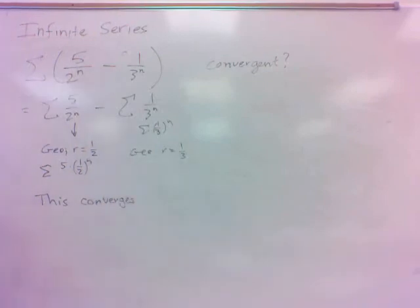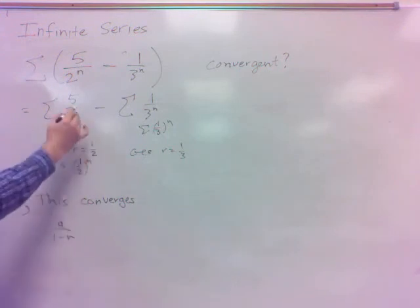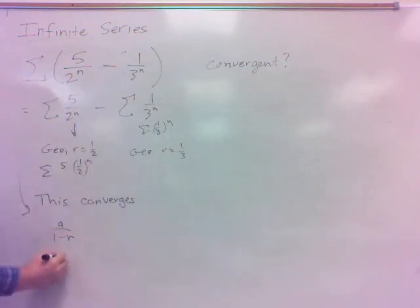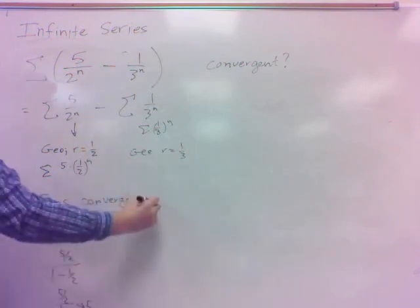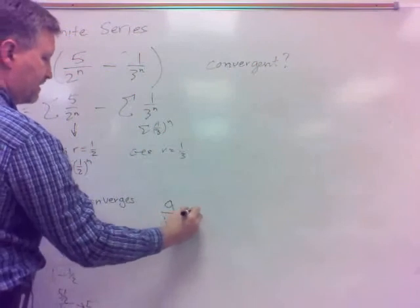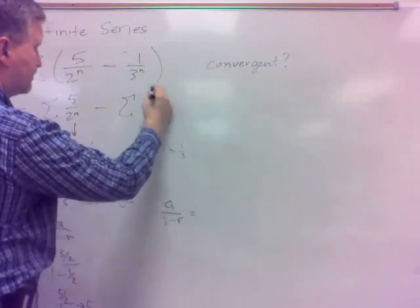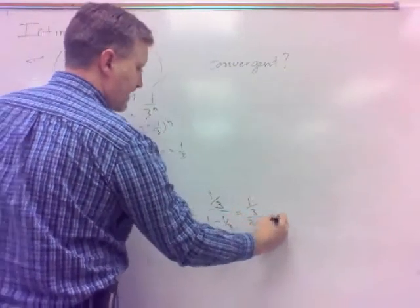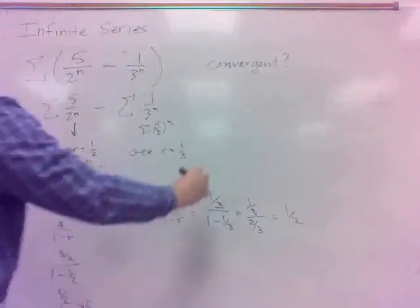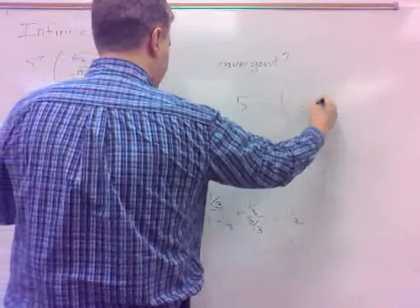As a matter of fact, what is this convergent to? This one would be A over 1 minus R: the first term would be 5/2, R is 1/2, so it would be 5/2 over 1/2, which is 5. This one — A over 1 minus R — the first term would be 1/3, and 1 minus 1/3 gives 2/3, so it'd be 1/3 over 2/3, which is 1/2. But this actually converges to 5 minus 1/2, which is 4 and a half.